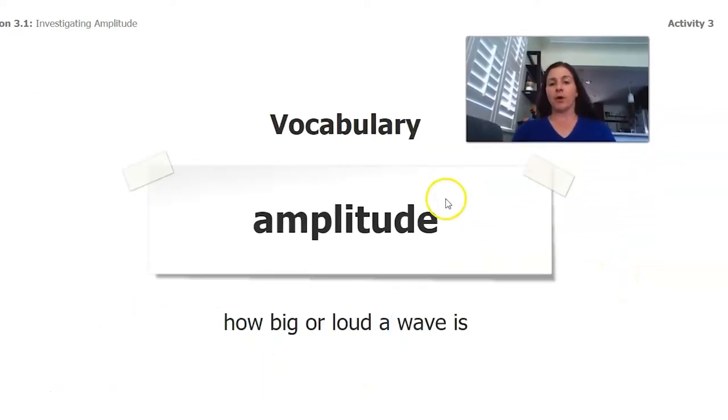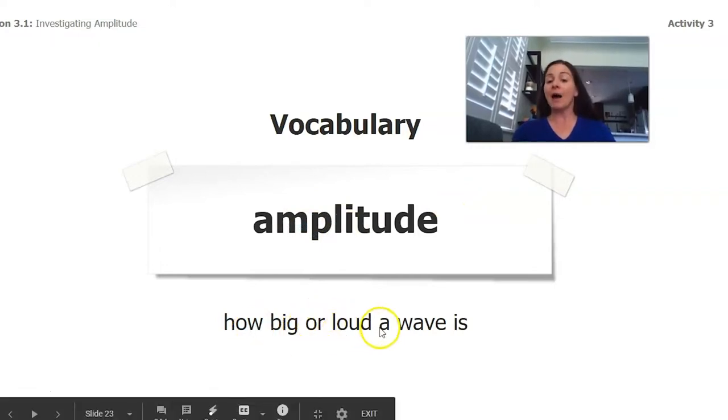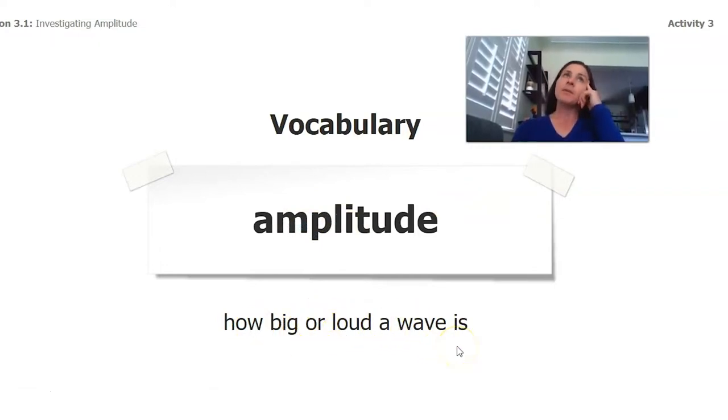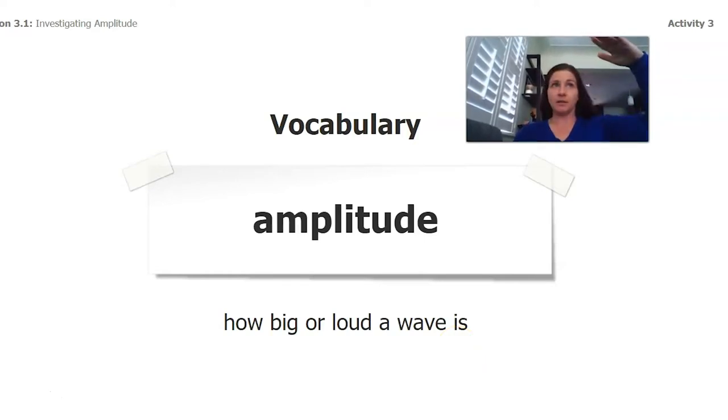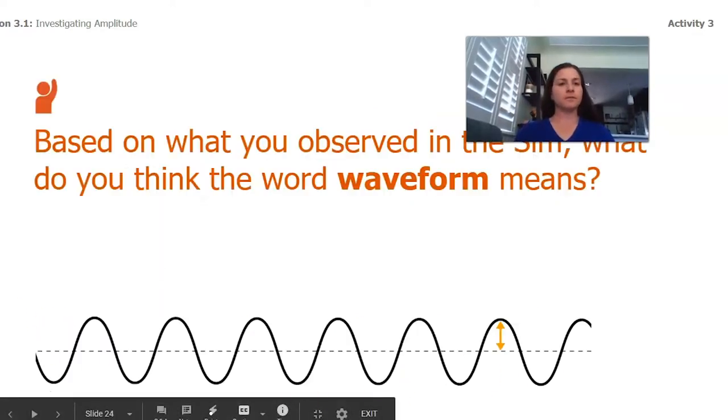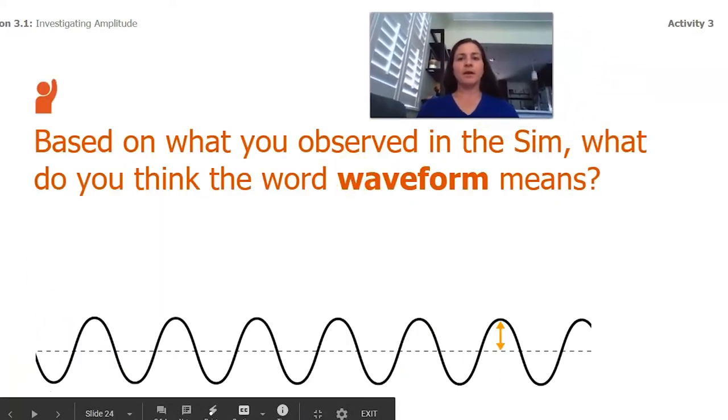So now we have a vocabulary word. Amplitude. How big or loud a wave is. Okay, so that makes me think amplitude is both how big a wave is, and how big it is is how loud it is. So if the amplitude is greater, the wave is bigger, and the sound is louder. I'm going to think of that like a big noise. If a big noise happens, it's really loud, and I can visualize those waves being really tall.